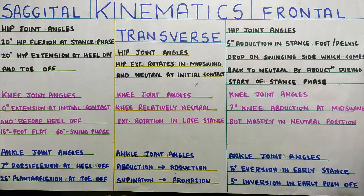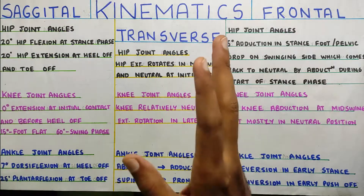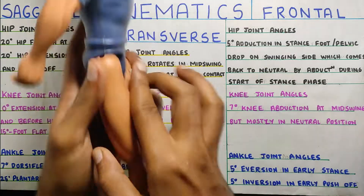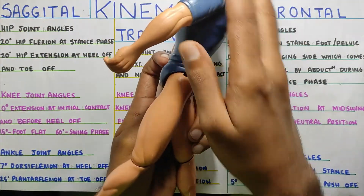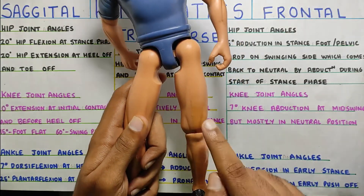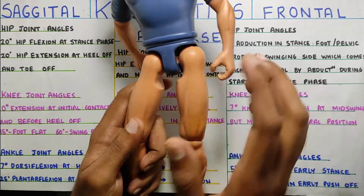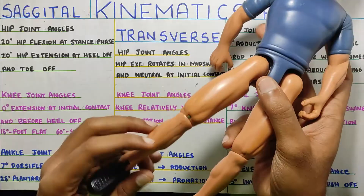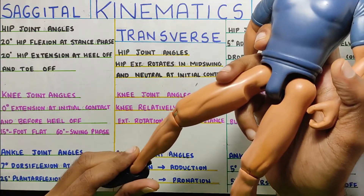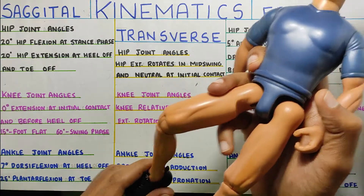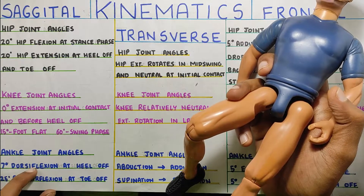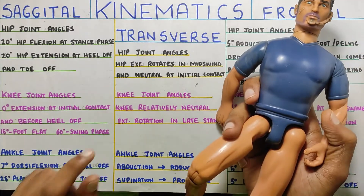Now there were a lot of angles in this video. The sagittal plane is the most important. At the hip: 20 degrees of flexion and 20 degrees of extension. In the frontal plane, the hip has adduction and abduction which changes based on which side you are weight bearing. At the knee, the most important things are: full extension (0 degrees) for initial contact, around 15 degrees of flexion for foot flat, and 60 degrees of flexion which is very important for the swing phase. And we need around 7 degrees of dorsiflexion at heel off.